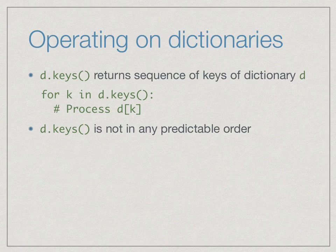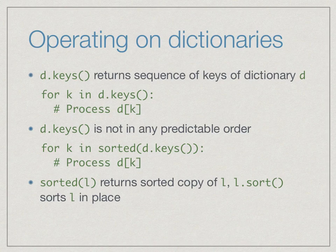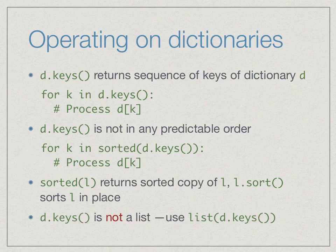One important thing to keep in mind is that d.keys() is not in any predictable order. Dictionaries are optimized internally to return a value for a given key quickly, so they may not preserve insertion order. If we want keys in a specific order, we can use the sorted() function: 'for k in sorted(d.keys())'. Note that sorted(l) returns a sorted copy of l without modifying l — unlike l.sort() which sorts in place. Also, d.keys() is not a list but a sequence like range; use list() to convert it.